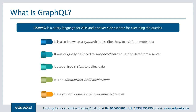Nowadays GraphQL has again become the buzzword in the market. Earlier we just had REST API, but now we have GraphQL APIs also. GraphQL API is another way to write and use your API. GraphQL is a query language for APIs and a server-side runtime for executing queries. It is also known as a syntax that describes how to ask for remote — meaning partial — data.